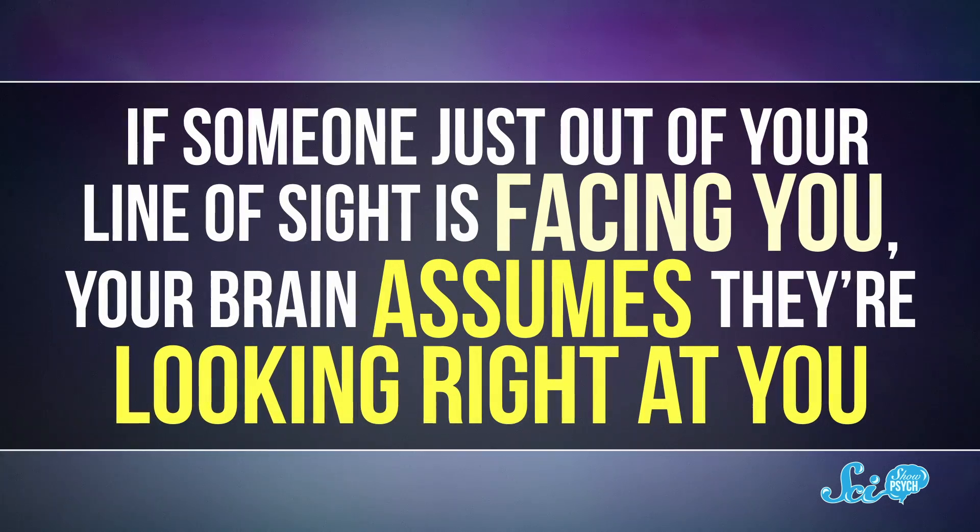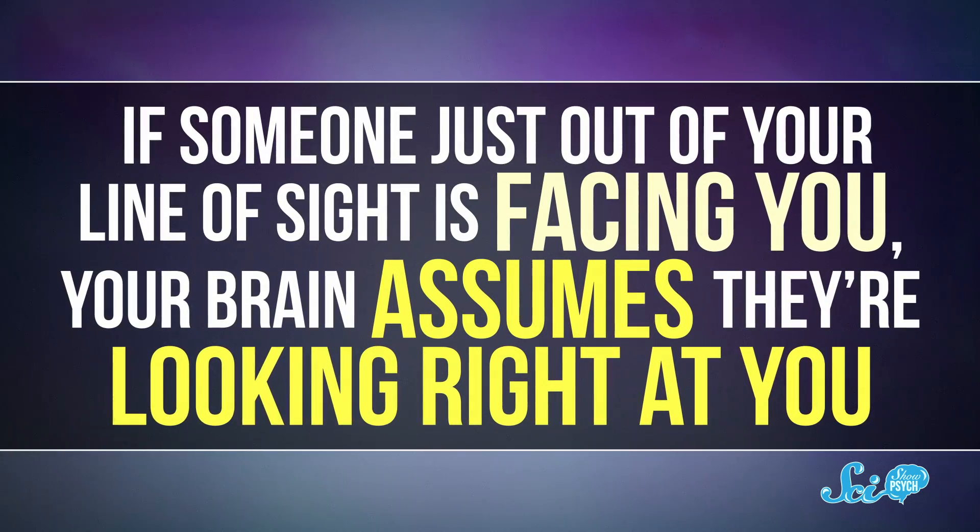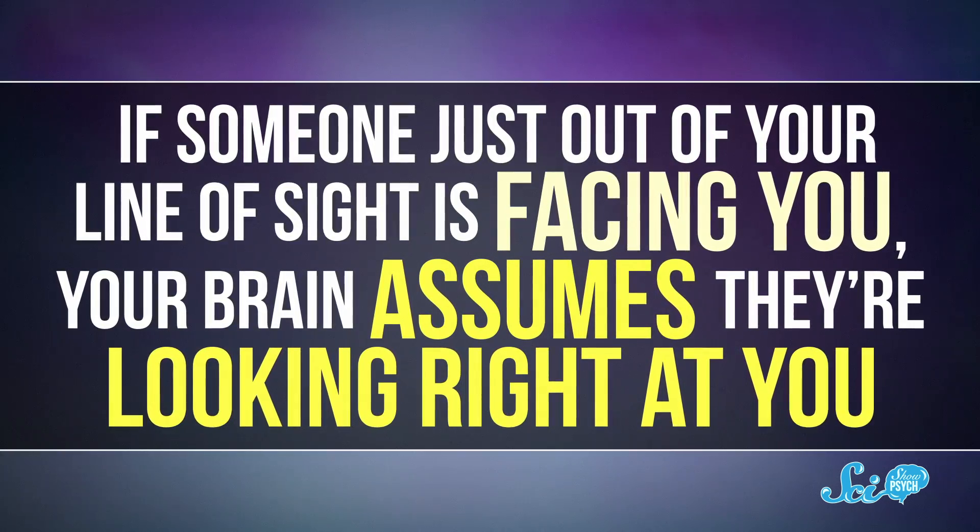This and the result of a similar study from 2015 showed that if faces in the periphery were pointed right at participants, they were more likely to assume it was a direct gaze. So basically, if someone just out of your line of sight is facing you, your brain assumes that they're looking right at you.